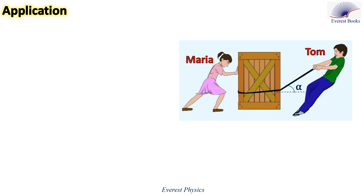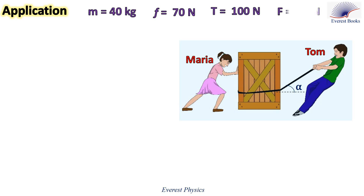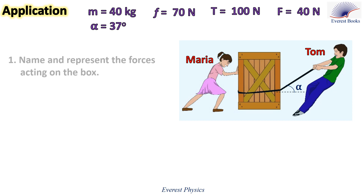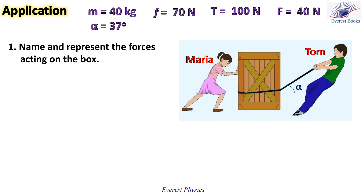Let's solve an application about the work-energy theorem. In the adjacent figure, Tom pulls a heavy box of mass 40 kilograms by means of a rope which exerts a tension force T making an angle alpha with the horizontal. Maria pushes the box to the right by exerting a horizontal force F. The resultant friction force acting on the box is horizontal to the left with a constant magnitude of 70 newtons. Given that T equals 100 newtons, F equals 40 newtons, and alpha equals 37 degrees.